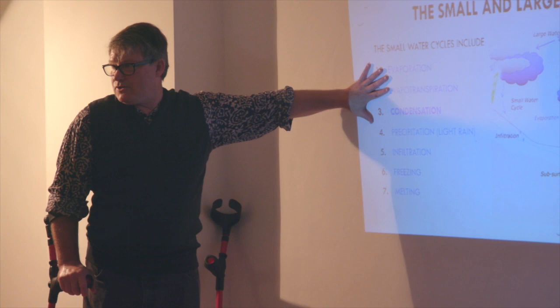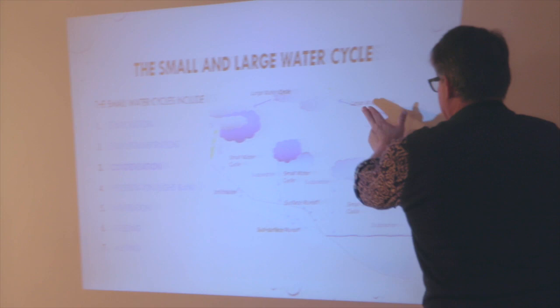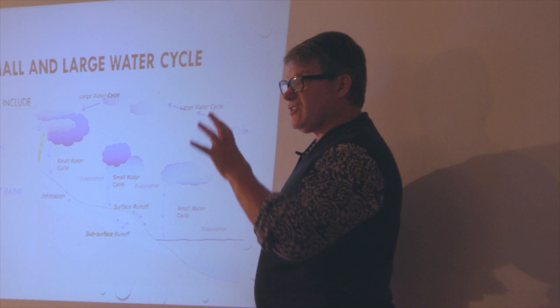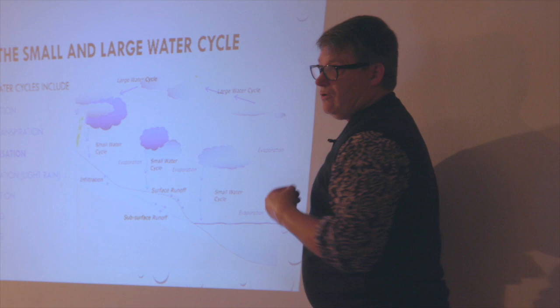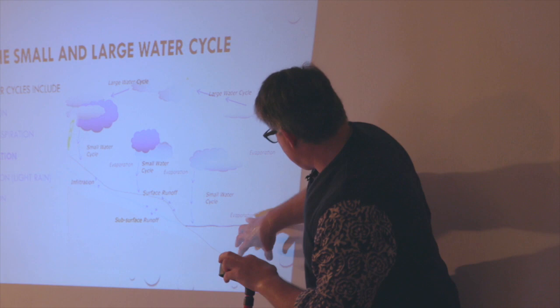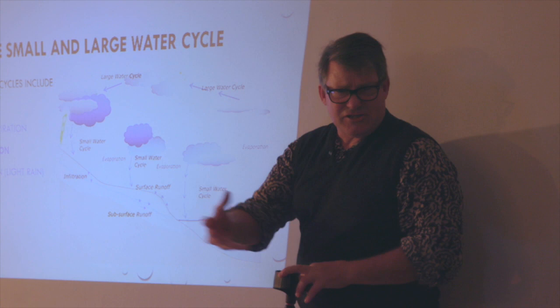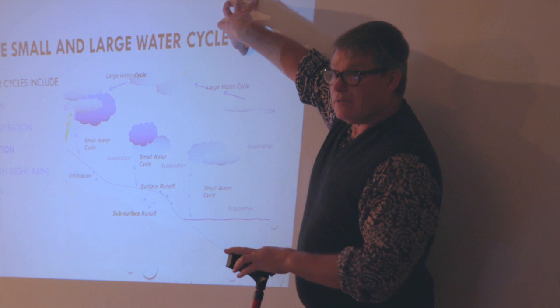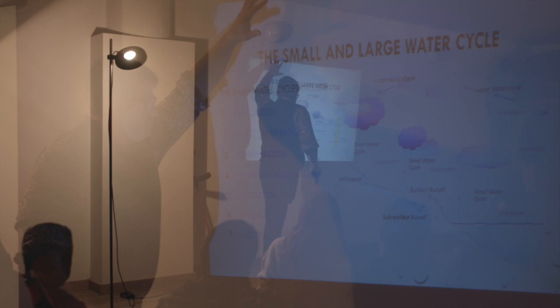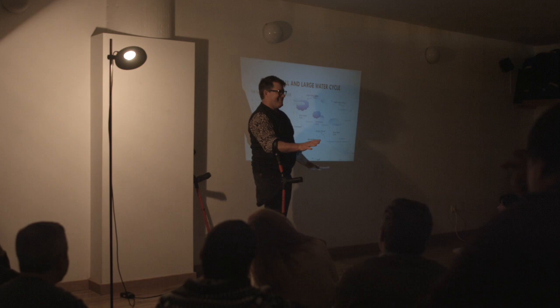We have the large water cycle. The large water cycle is the ocean and the seas - the Mediterranean, the Atlantic or Pacific, the big water. The evaporation comes from the sea, and because the sea is so big, it's big amounts of water, big clouds, and that comes over to the land. Boom! Big rain.